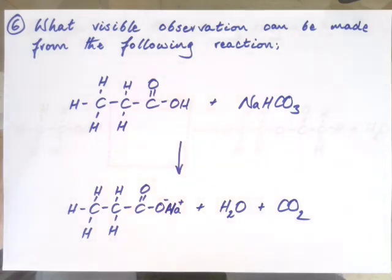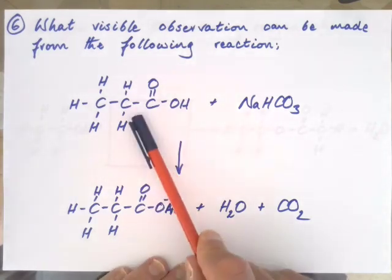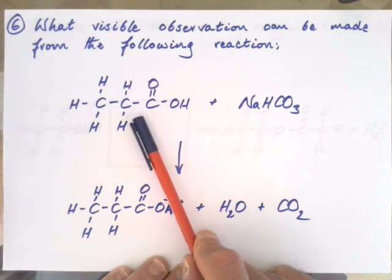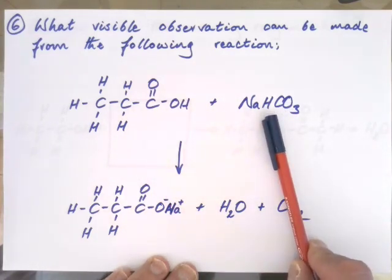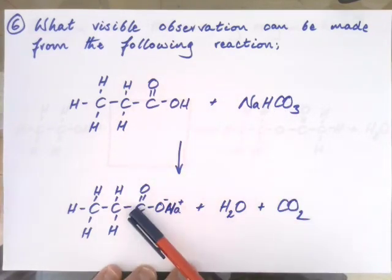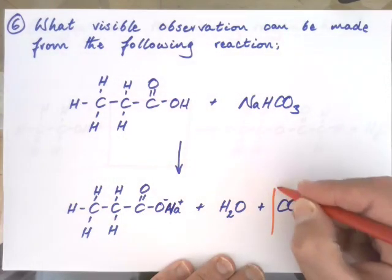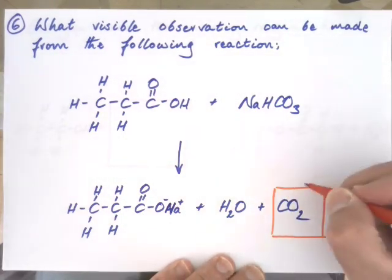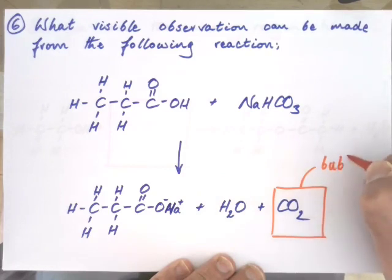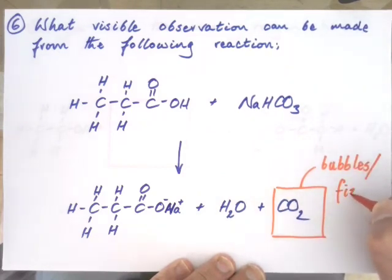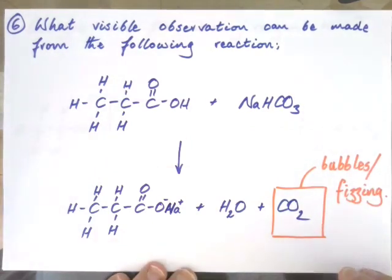What are you going to see here? Propanoic acid has no colour, sodium hydrogen carbonate solution has no colour, sodium carbonate has no colour, and water is colourless. The only thing you'd see is CO₂ — and you'd see it in the form of bubbles. You would see fizzing. Any carboxylic acid would produce fizzing, and that is used as a test to identify the presence of carboxylic acid.